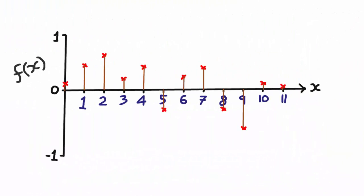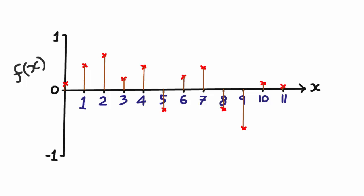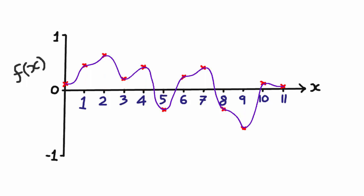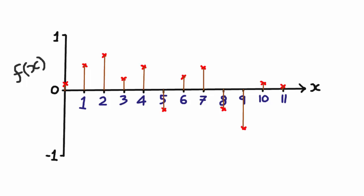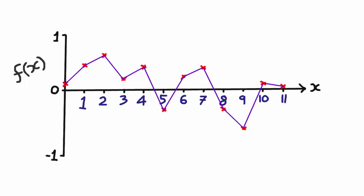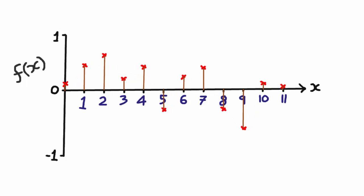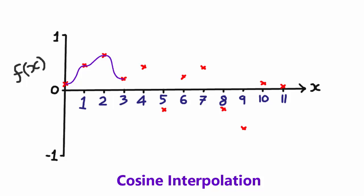What we've done so far creates a function where for any integer input our function returns a height value. Up until now we haven't worried about what happens between these points, because we've only been using integer values. What we're going to do now is interpolate between the points so that we can use float inputs — like 3.6 for example — and still get an output. There are various interpolation methods we could use; the easiest would be linear interpolation, but that doesn't look very natural. So we're going to use cosine interpolation, which creates a cosine-like curve between every two points.